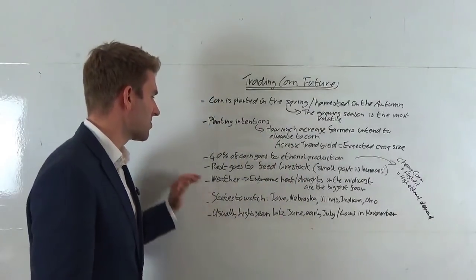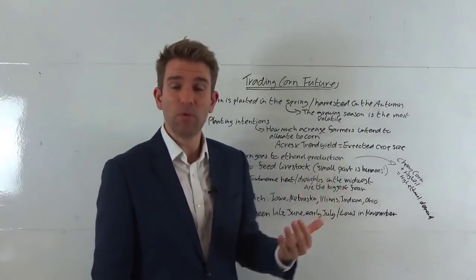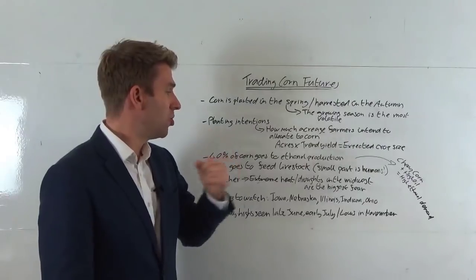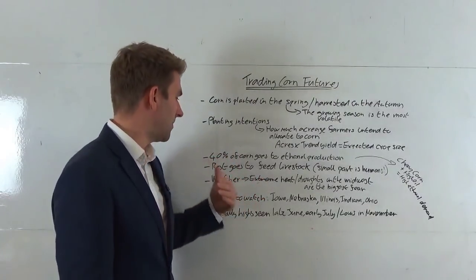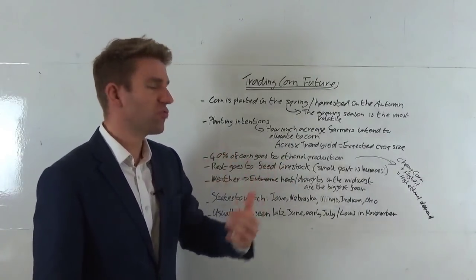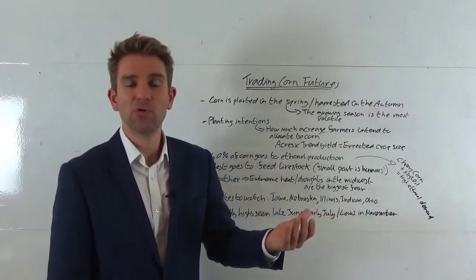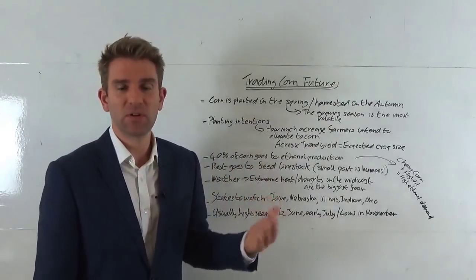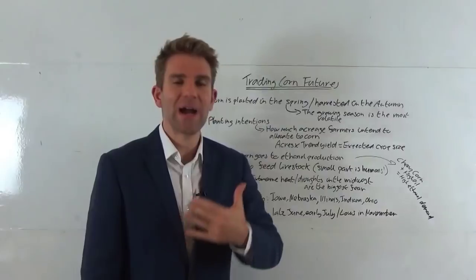The rest of the corn goes to feed livestock, animal feeds, etc. Only a very small part of it is for humans. Weather, as with a lot of commodities, is the big one. Especially the quantities that are growing, of course. Extreme heat and droughts in the Midwest are the biggest fear for farmers and corn traders. Well, maybe not if you're long, but they're the biggest fear in terms of volatility. Any heat or drought that's causing the soil to crack, there's no moisture there for the plants to grow.